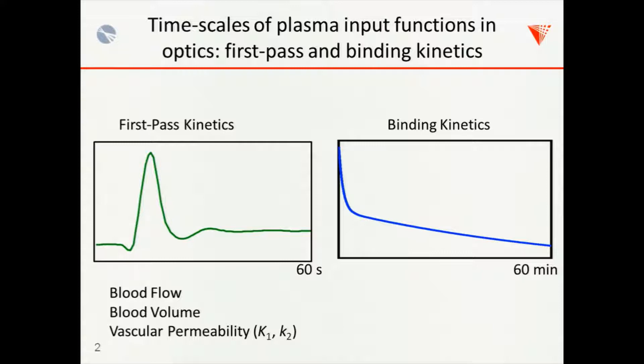So, the first pass kinetics, I'm not going to talk too much about this, but this is really where you can get very high sensitivity to blood flow, blood volume, and vascular permeability, sort of your K1 and K2 parameters. And with the binding kinetics, that's where you can still have some sensitivity to vascular permeability, obviously, as Professor Lammertsma showed, but it offers you sensitivity now to binding, which happens typically at a slower rate on the K3 and K4 order.